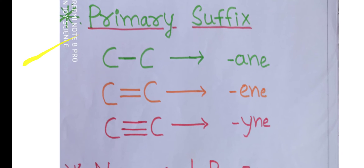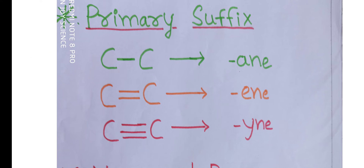There are some primary suffixes. For a carbon-carbon single bond, the suffix is 'ane', so the name becomes alkane. When there is a carbon-carbon double bond, the suffix is 'ene' and the name becomes alkene. If there is a carbon-carbon triple bond, the primary suffix is 'yne' and the name becomes alkyne.